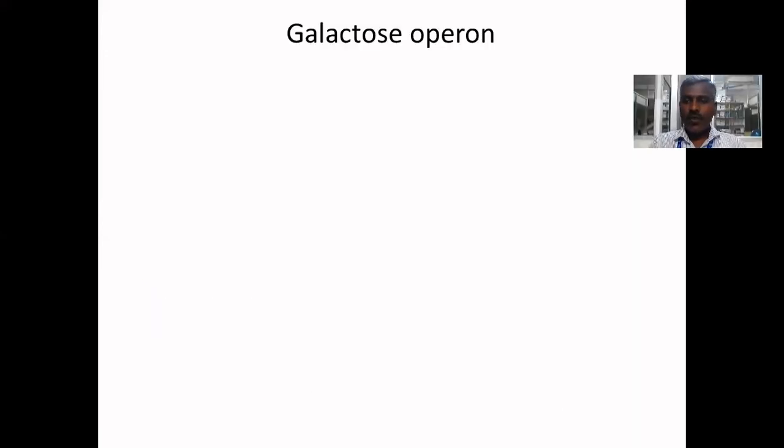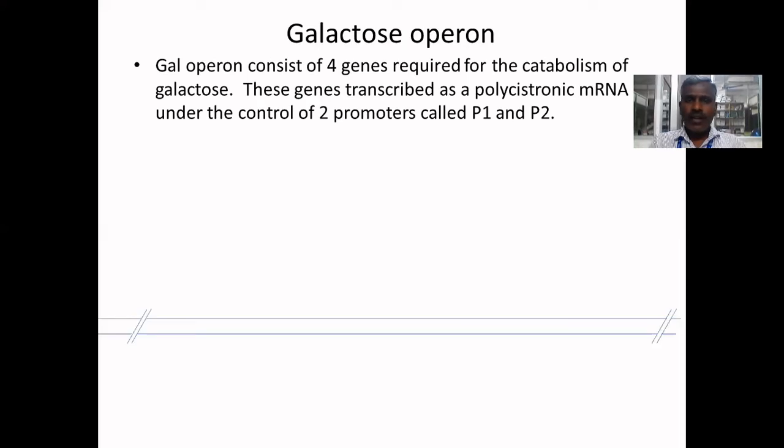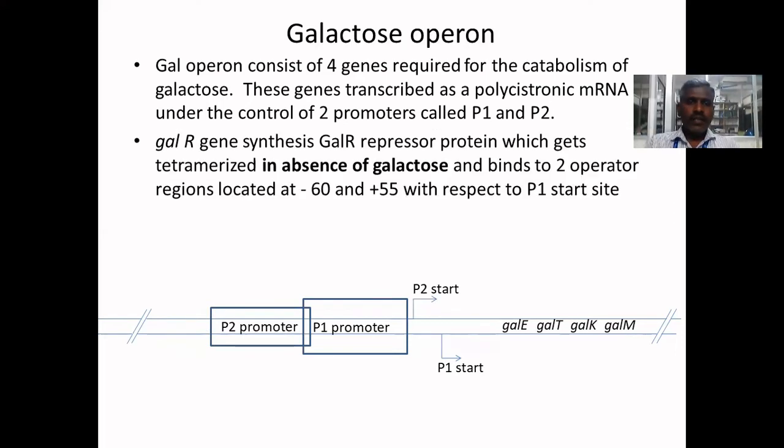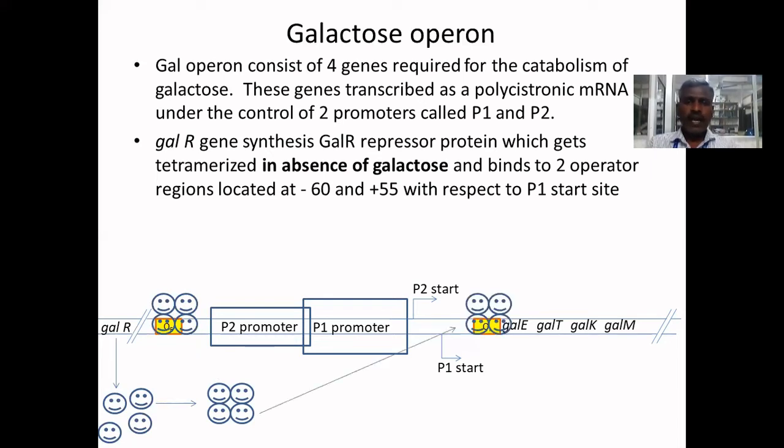Galactose operon concept. Gal operon consists of four genes required for the catabolism of galactose. These genes are transcribed as a polycistronic mRNA under the control of two promoters called P1 and P2. GalR gene synthesizes GalR repressor protein which gets tetramerized in absence of galactose and binds to two operator regions located at minus 60 and plus 55 with respect to P1 start site.